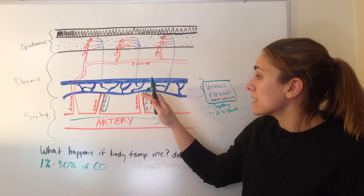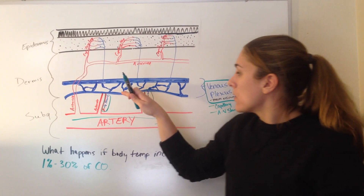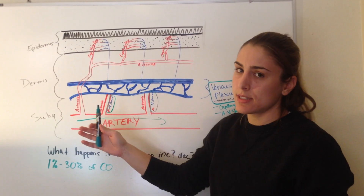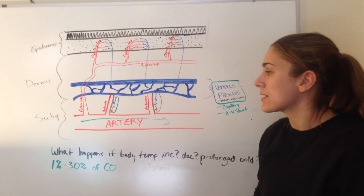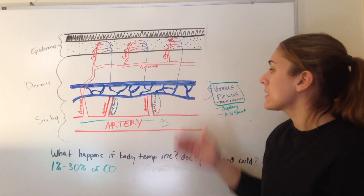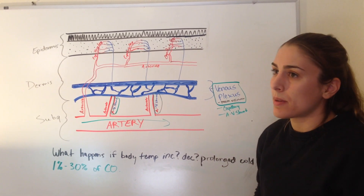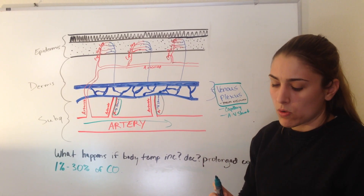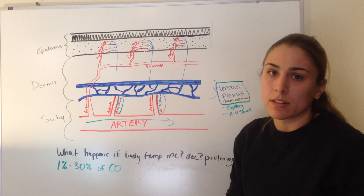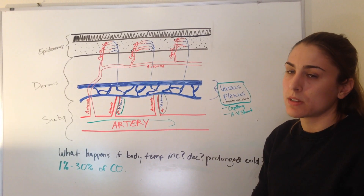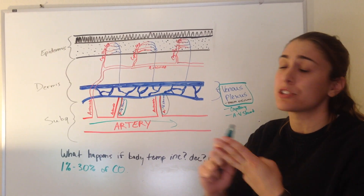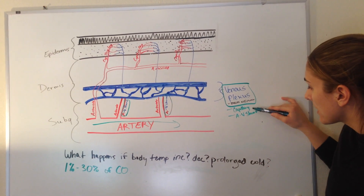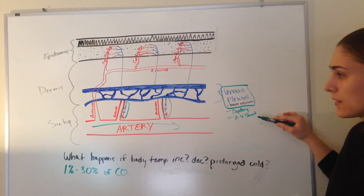Instead, most of the blood is going to go to the arterioles into the venous plexus. Now this venous plexus is where it's at. The venous plexus is basically in the superficial layer of the dermis, so it's very close to the environment, right under the skin. It's what we're talking about when discussing dissipation of heat, redistributing the reservoir of blood, and color change in your skin. It's your main reservoir, and it receives blood from your capillaries and your AV shunts.